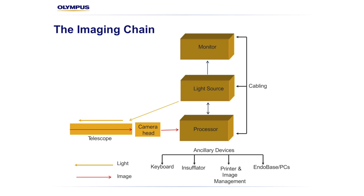A solid understanding of the imaging chain components is crucial to help you deliver an image of the best possible quality for your customers and patients. Advancing your understanding of the imaging chain can help you work closely and consultatively with your customers, not only to troubleshoot when something goes wrong, but also to help optimize their experience in the OR. The image on your monitor is a direct result of several specific components or links, with each performing a specific role — the image is only as good as its weakest link.